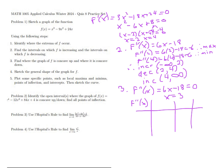If we test our second derivative before and after x = 3 — since we know it equals zero there — we can try x = 2.5. Six times 2.5 gives us 15, and 15 minus 18 is negative three. All we care about is the sign: it's negative, so the graph is concave down before the inflection point.